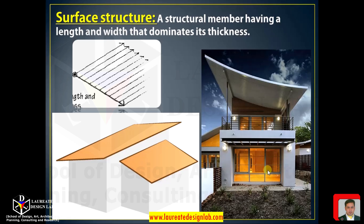Now we'll learn about surface structures. A surface structure is a structural member whose length and width dominate its thickness — meaning it has a negligible thickness compared to its other dimensions. These roofs can be considered surface structures, whether they are horizontal, sloping, or curvy. The covering of a building, in any of these forms, is called a surface structure.